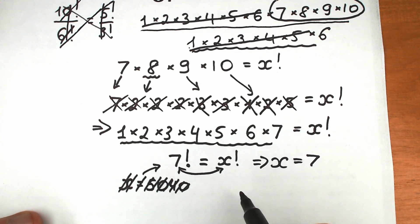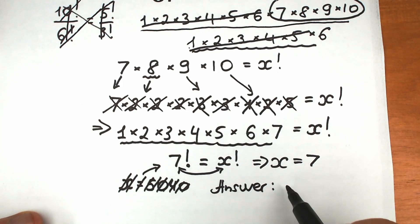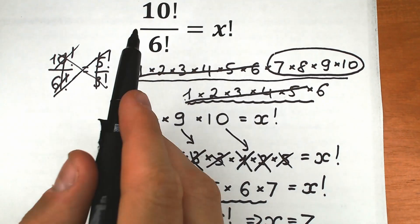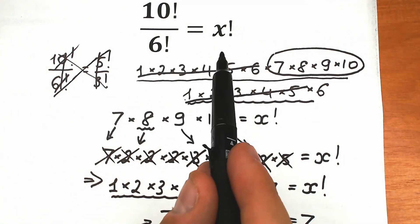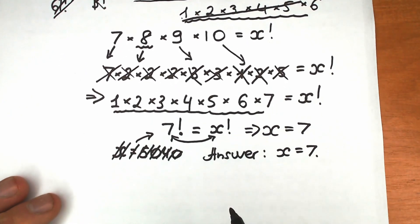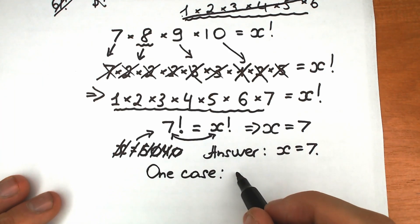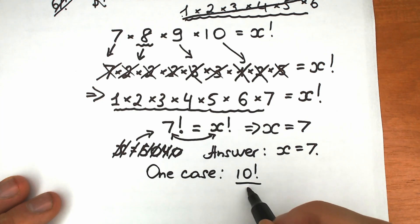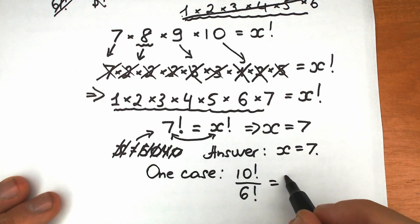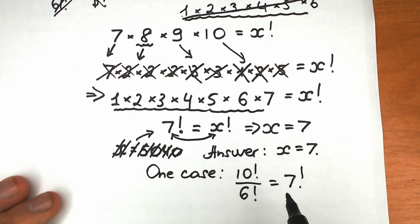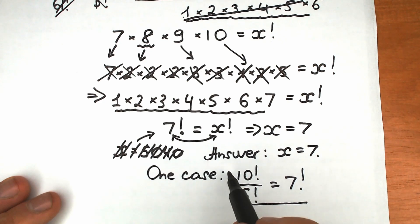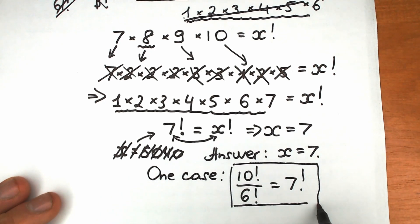Our correct answer is x equals 7. And I want to say this is the one and only case in terms of factorials where dividing two factorials gives a result that is also a factorial. It works only for these specific values: 10 factorial over 6 factorial equals 7 factorial. There are no other cases.